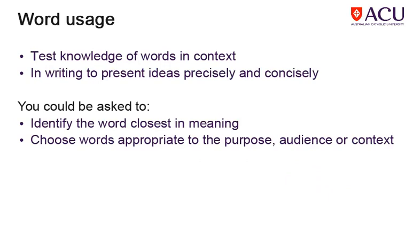Another skill assessed in this section of the literacy test is word usage — your knowledge about using words that are appropriate to a context. This skill area is important in writing as it ensures that ideas are presented precisely and concisely. In the test, you could be asked to identify the word closest in meaning and one that is appropriate to the purpose, audience, or context of a sentence or paragraph.